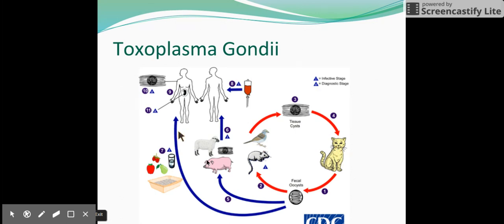The cat eats one of these mice or one of these birds. So these are the transport hosts. The cat is the definitive host. This is where the Toxoplasma gondii, this little microscopic parasite, is going to be reproducing.